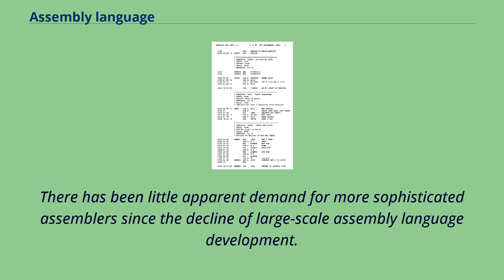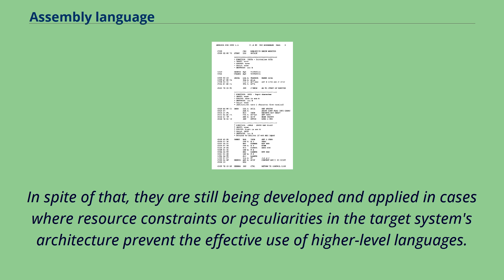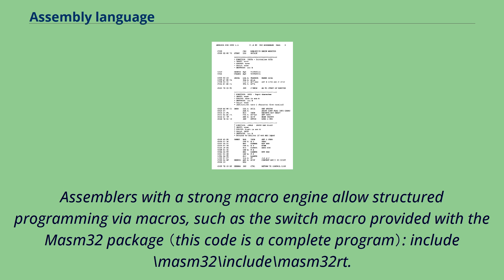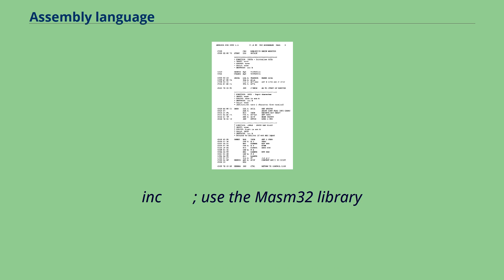There has been little apparent demand for more sophisticated assemblers since the decline of large-scale assembly language development. In spite of that, they are still being developed and applied in cases where resource constraints or peculiarities in the target system's architecture prevent the effective use of higher-level languages. Assemblers with a strong macro engine allow structured programming via macros, such as the switch macro provided with the MASM32 package.